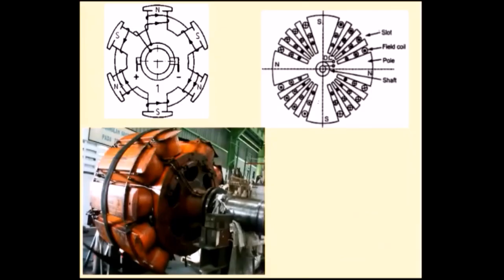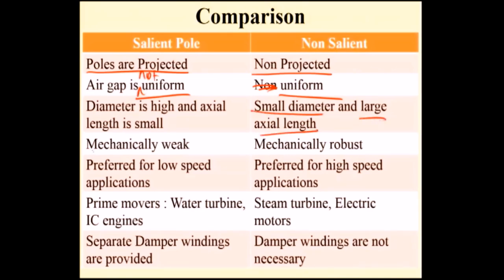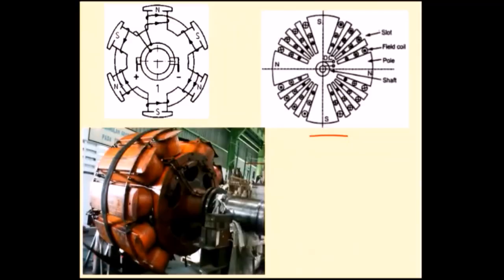This is a practical 10-pole salient pole rotor. In comparison: salient pole rotor has projected poles and a non-uniform air gap, while non-salient pole rotor has non-projected poles and a uniform air gap. The salient pole rotor has a large diameter and small axial length, while the non-salient pole rotor has a small diameter and large axial length. The salient pole rotor is mechanically weak.